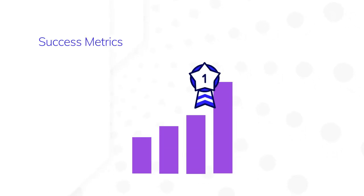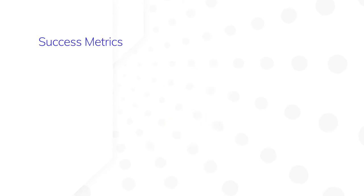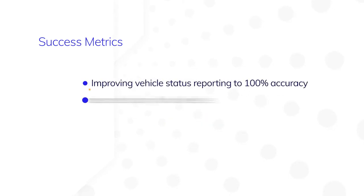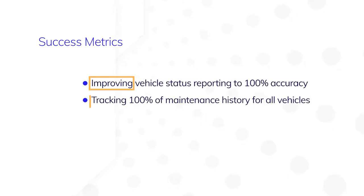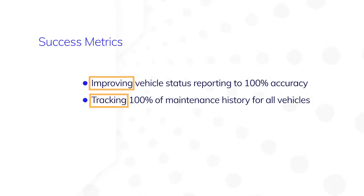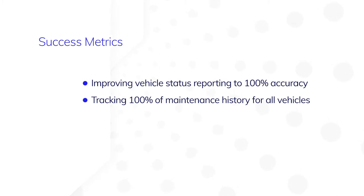Now let's talk about what success looks like. If your application works as planned, what would be the result? Measurable results usually start with action verbs. In the case of Acme Auto, success is defined as improving vehicle status reporting to 100% accuracy and tracking 100% of maintenance history for all vehicles in the fleet.